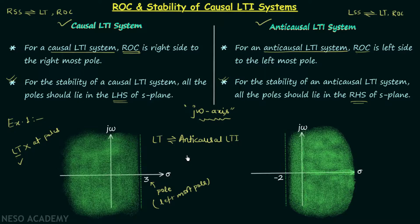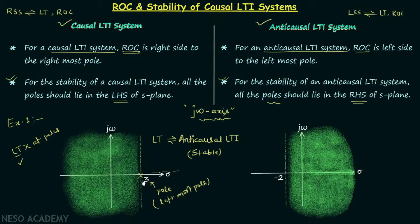Now for stability: the j-omega axis is included in the region of convergence, which implies the anticausal system is stable. You can also verify this using the other property — all poles should lie in the right half of the S-plane. Since 3 is the leftmost pole and all other poles lie to its right, and 3 itself is on the right half of the S-plane, all poles exist on the right half of the S-plane. This confirms the anticausal system is stable.